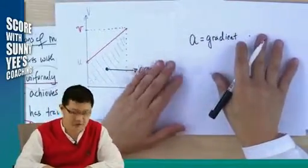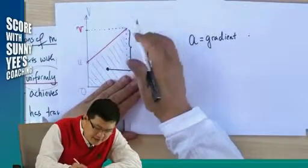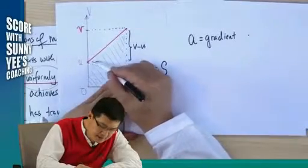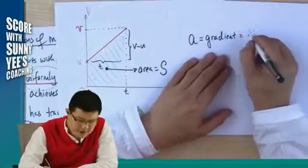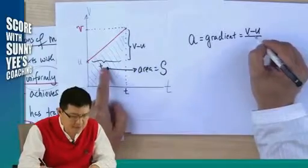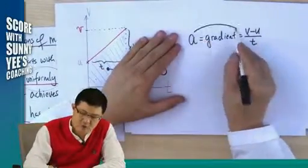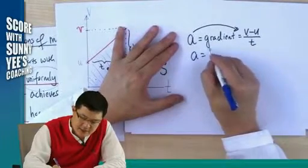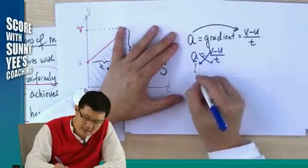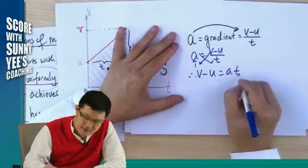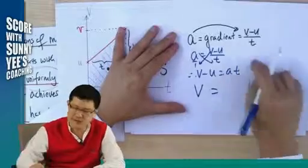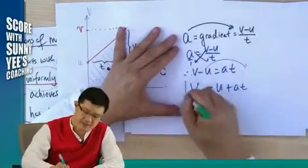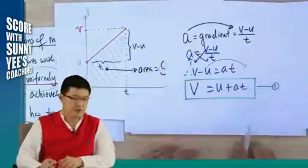The acceleration of this graph will be: this gradient — this length is V minus U, and this part is T. So your gradient is V minus U over T. That gives us the formula for acceleration. Cross multiplying: A equals V minus U over T, so V minus U equals AT, which gives us V equals U plus AT. This is the first equation of motion.